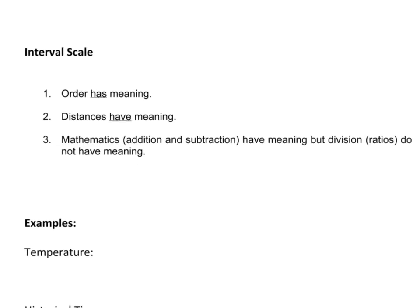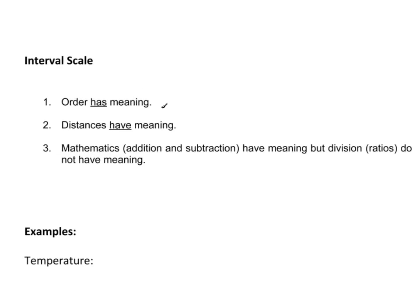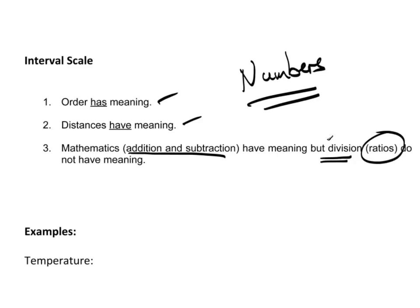The next measurement scale is the interval scale. Here, just like order does have meaning, but this time distances have meaning. So these are actually numbers. These are actually numbers that have true numeric value. However, addition and subtraction makes total sense, but division, looking at the ratios, do not have meaning.